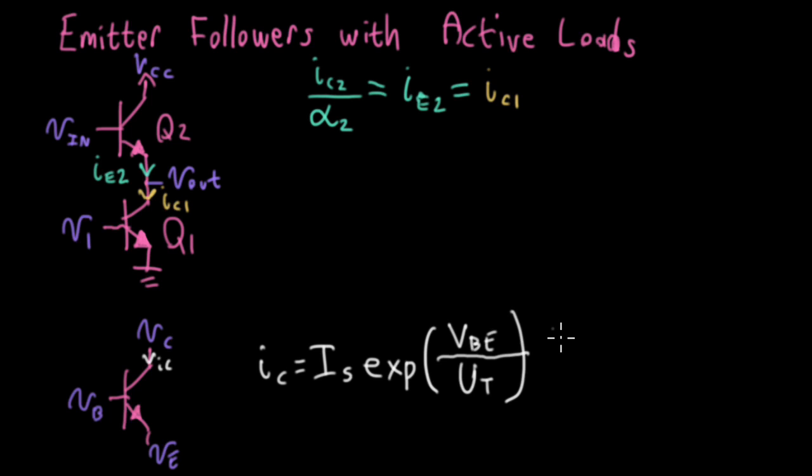One other thing I want to talk about is the early effect. So this isn't an ideal source. I'll write one plus the voltage between the collector and the emitter times the early voltage VA. Now, one thing I want to emphasize is this is assuming that this transistor is acting in the active region.